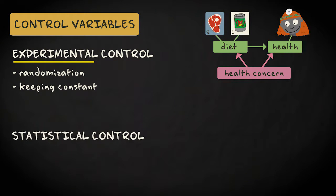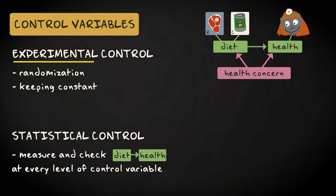Another way to take potential confounders into account is by controlling them statistically. Statistical control means measuring the control variable and checking whether the relation between the independent and dependent variable holds at each level of the control variable.